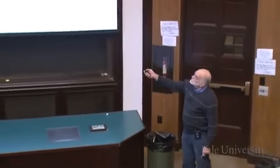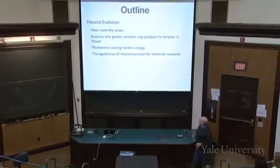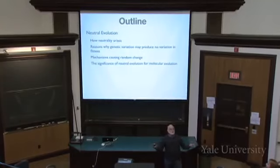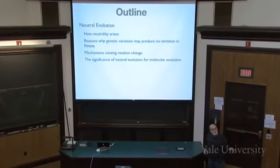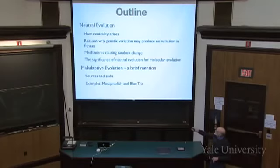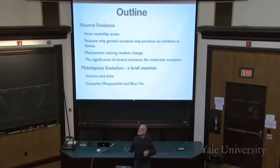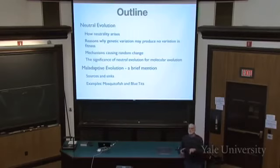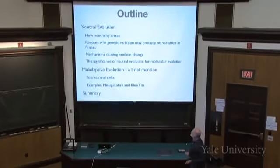The outline of the lecture covers how neutrality arises — mechanistically, why some genes are neutral; the reasons why genetic variation might not produce any variation in fitness; the mechanisms that cause random change; and the significance of neutrality for molecular evolution. I'll also briefly mention maladaptive evolution, so you can see how an evolutionary process can result in organisms not well adapted to their habitats. With that we will have covered the major possible outcomes of evolution: adaptation, neutrality, and maladaptation.